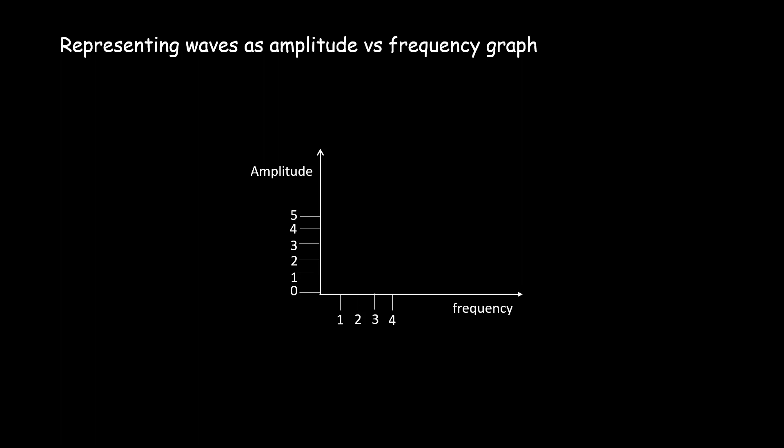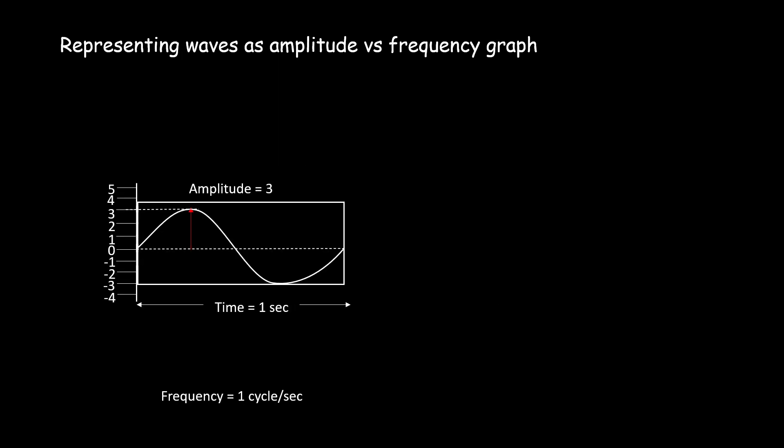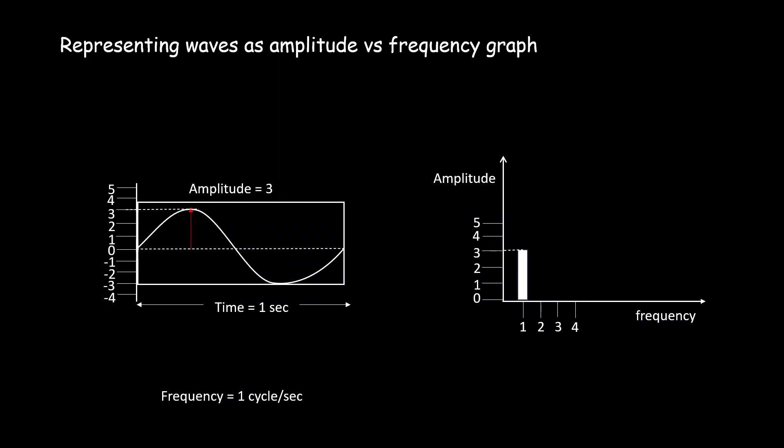Now let's represent the sine wave in terms of an amplitude versus frequency graph. The sine wave has a frequency of 1 cycle per second, an amplitude of 3 units, and a phase of 0 radians. We mark a point at 1 hertz on the frequency axis and raise it to 3 units on the amplitude axis. This represents our sine wave with a frequency of 1 hertz and an amplitude of 3 units.